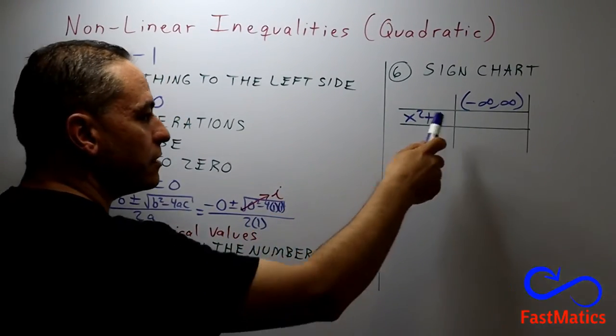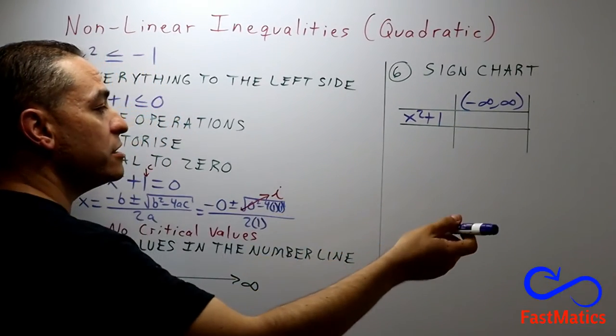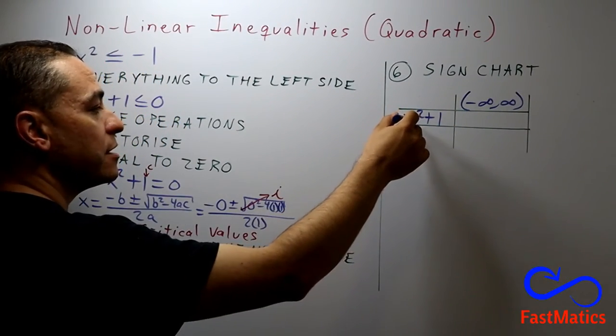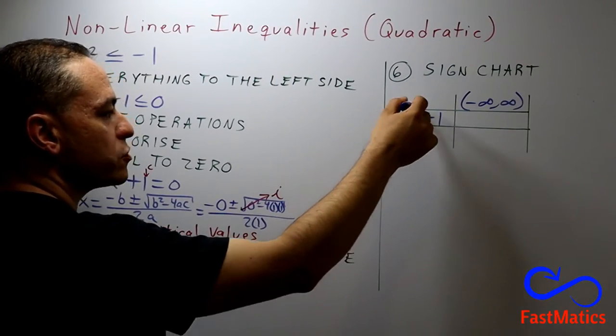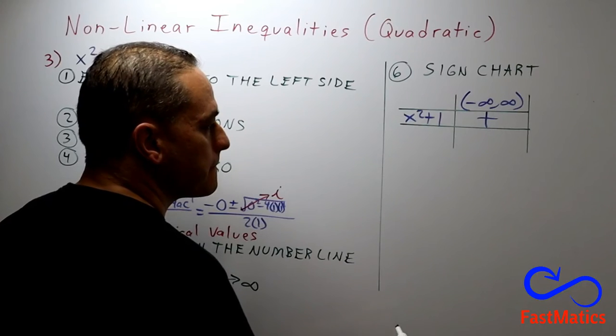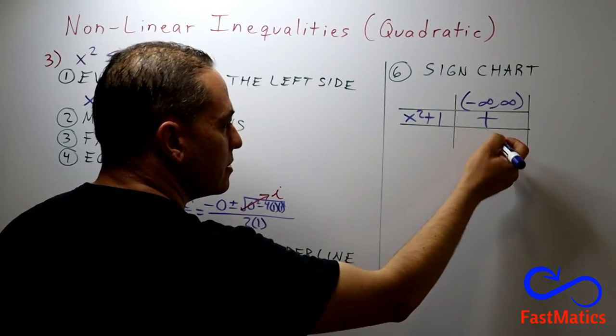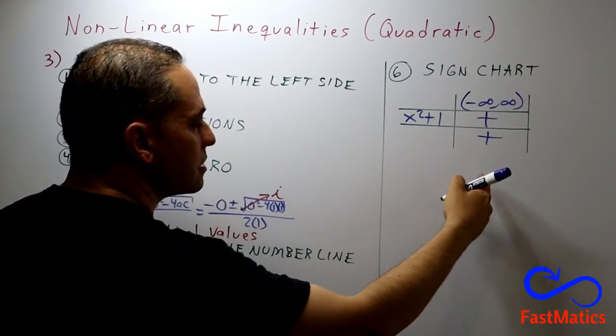And here, you will put the expression that is not factorized because it is impossible to factorize it. And now, you choose a value between negative infinite and positive infinite. And you replace the x with that value. For example, 0. 0 squared plus 1 is positive 1. So, the final answer of this chart is positive.